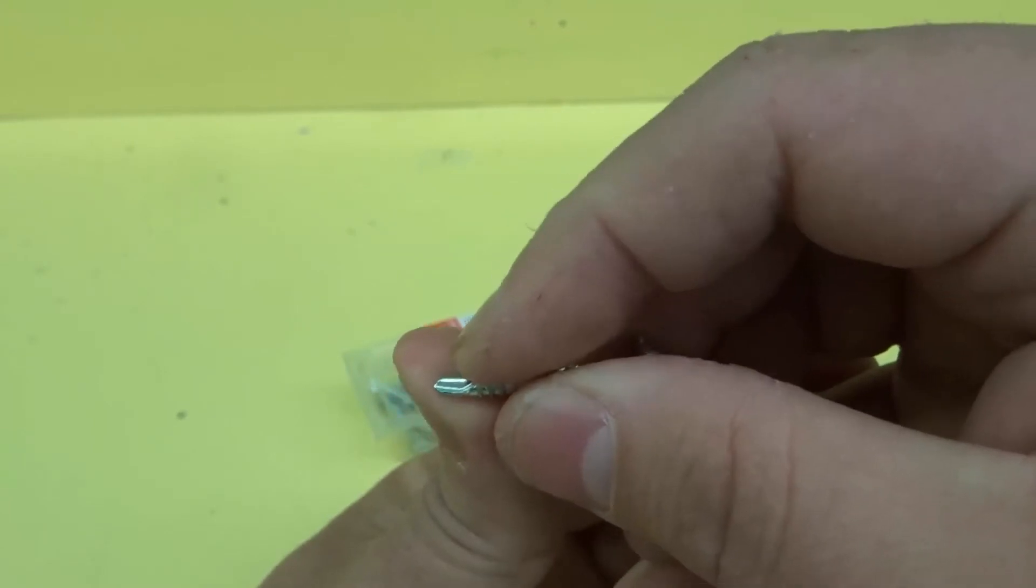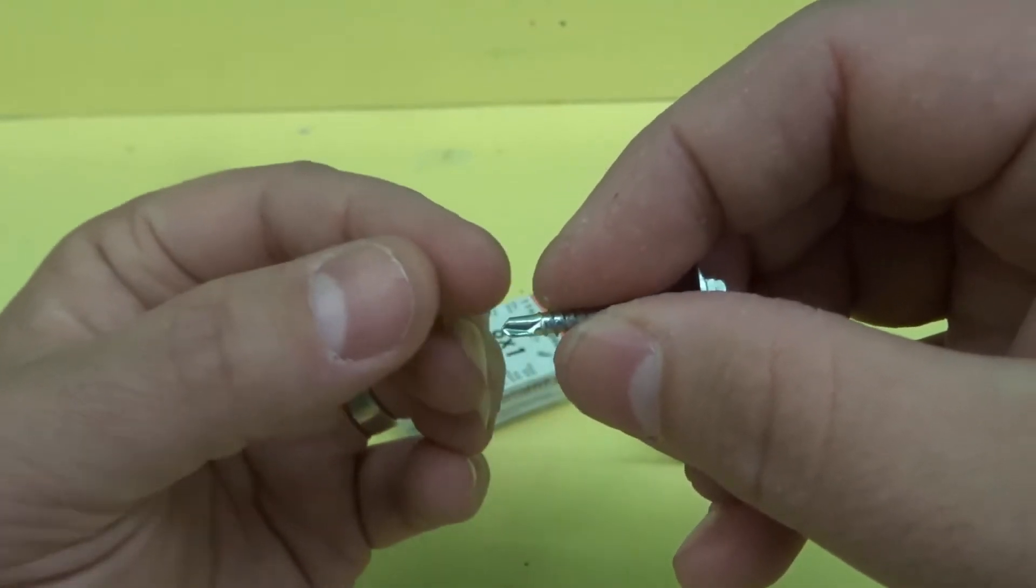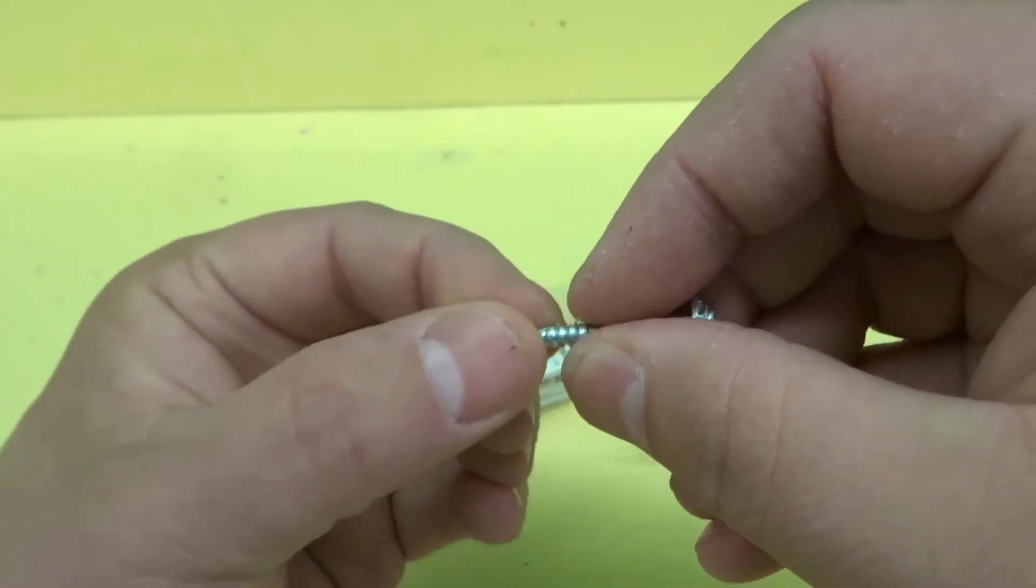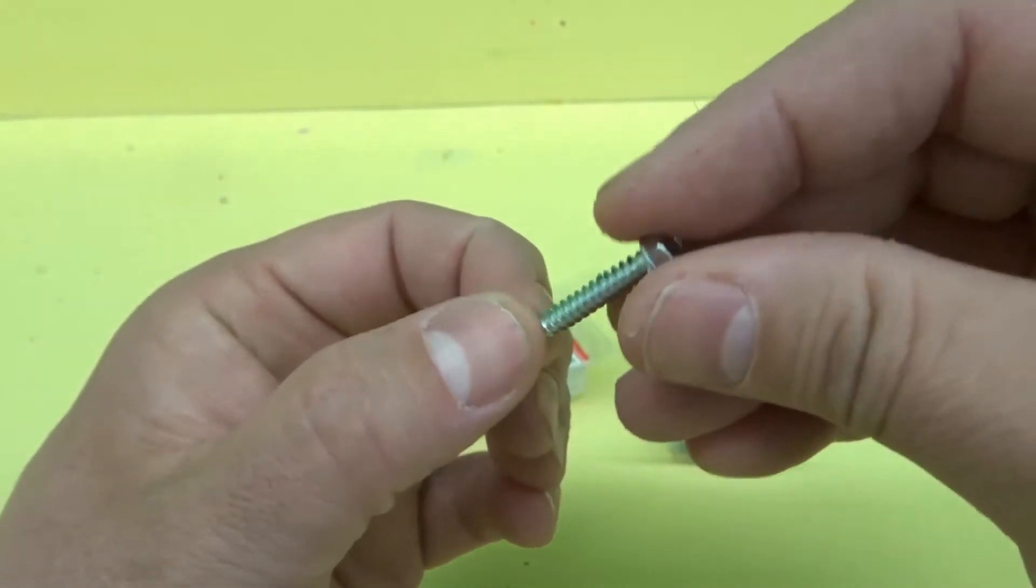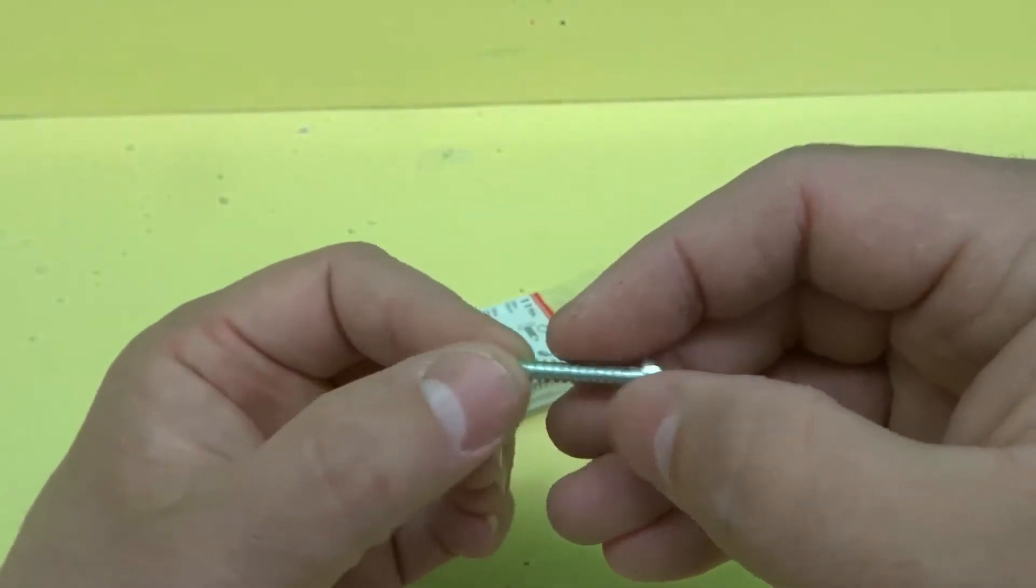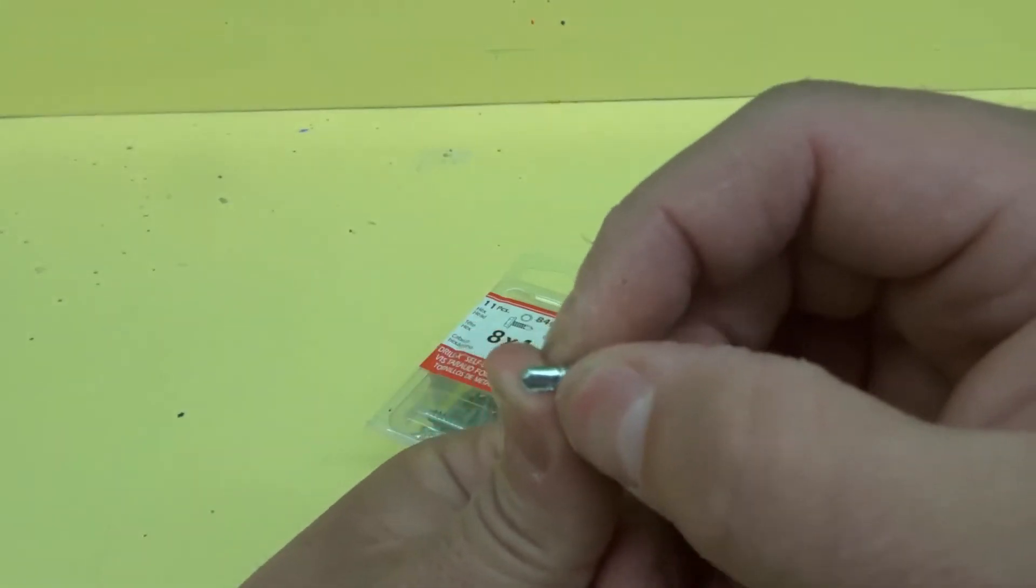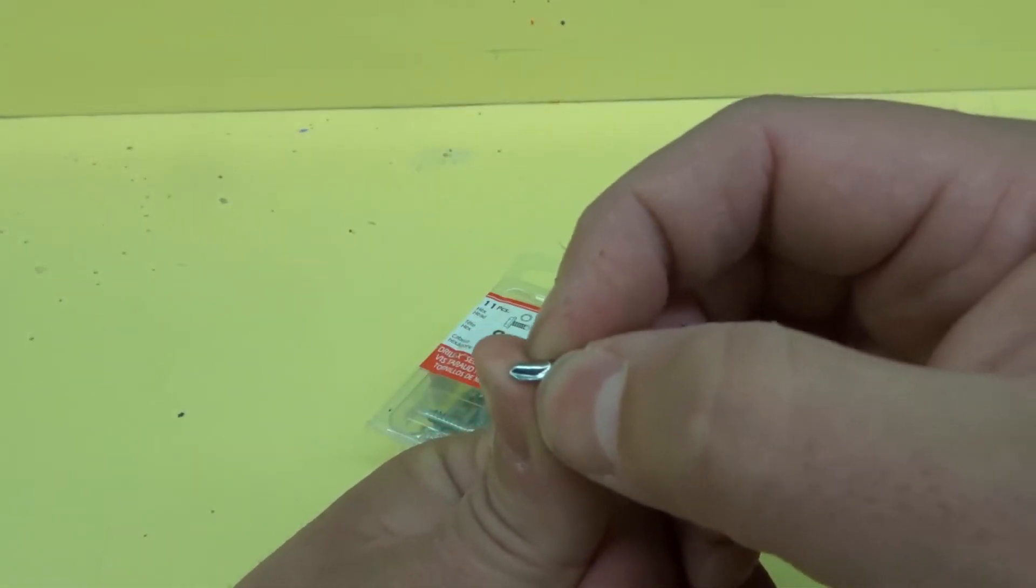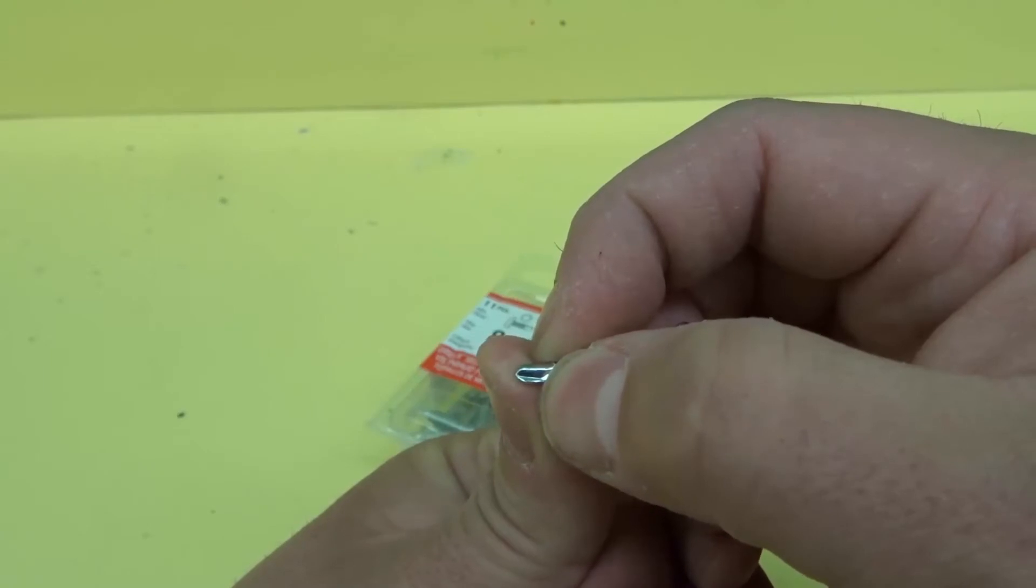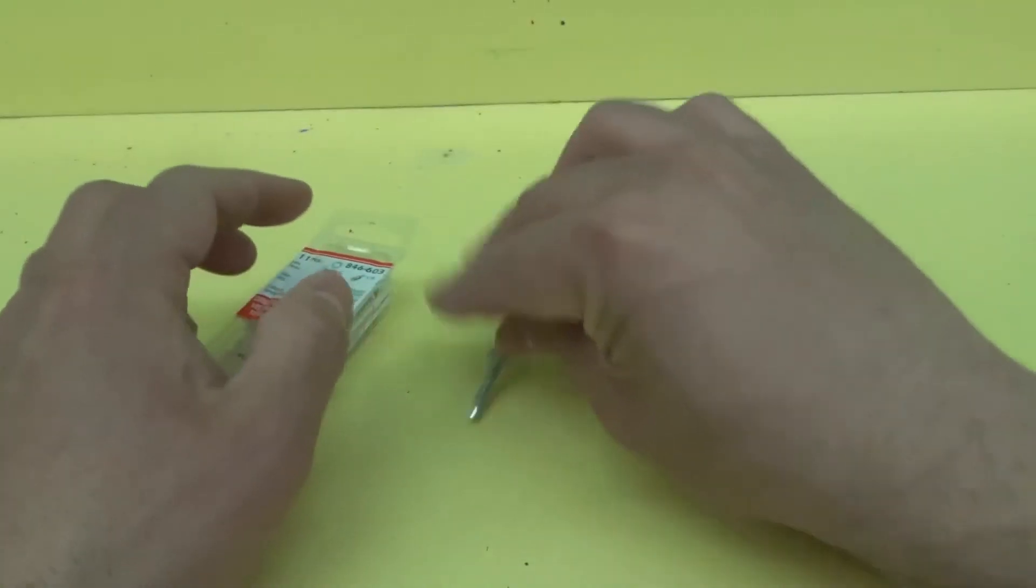This will drill the pilot hole, and then the screw will drop down into it and these threads will tap it into the material. So a self-drilling screw doesn't need a pilot hole because it creates its own with that piece. That's one option.